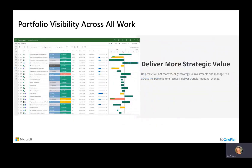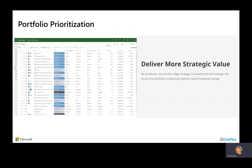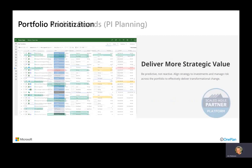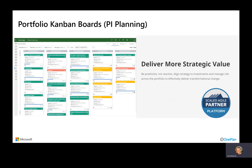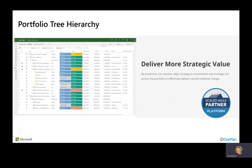Where OnePlan adds to the mix is providing more capabilities at the portfolio level. That includes the ability to bring in other tool sets — Project Professional, Planner, Azure DevOps, JIRA, and more — so your projects can come from a variety of sources. Portfolio prioritization allows for good scoring models for project selection and prioritization. For more agile organizations, the portfolio can be viewed and interacted with in a Kanban board for things like program increment planning. Product roadmaps are created automatically based on data in the OnePlan and Power Apps solution, and a portfolio tree hierarchy lets you organize things into portfolios, programs, value streams, or whatever your structure is.